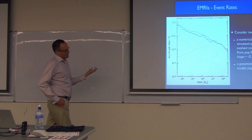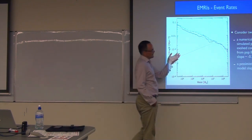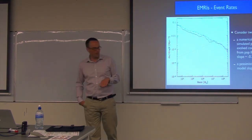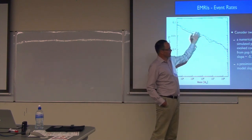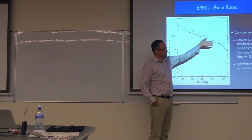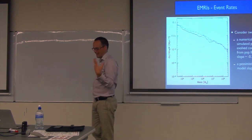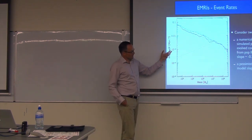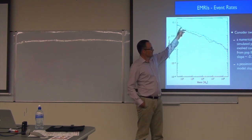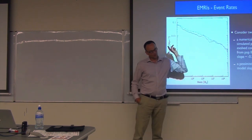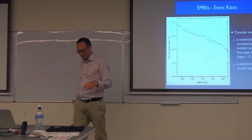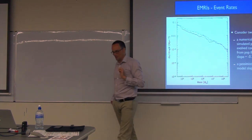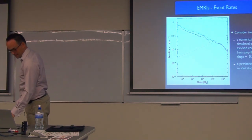Predictions are consistent with numerical simulations. If you take population 3 models and evolve them forward and extract the masses of black holes, you tend to get slopes around minus 0.3, based on certain assumptions. In terms of what LISA will see, it is better if the slope is more positive, because then we have many more black holes in the range LISA is sensitive to.